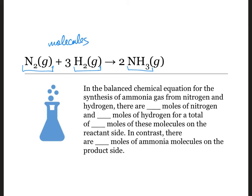All right, so in the balanced chemical equation for the synthesis of ammonia gas from nitrogen and hydrogen, there are blank moles of nitrogen. All right, so we've got this understood one in front here. So we have one mole of nitrogen molecules, and we have three moles of hydrogen. So if we add those coefficients up, we see that we have a total of four moles of molecules on the reactant side.